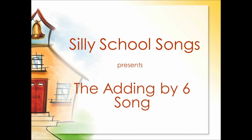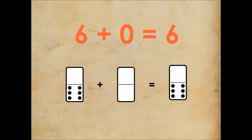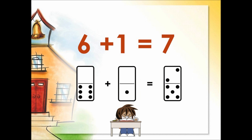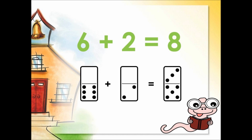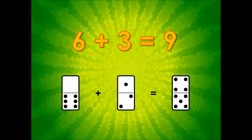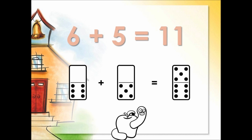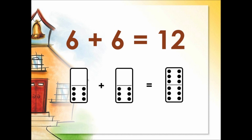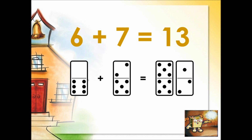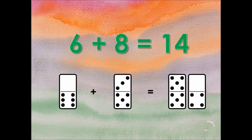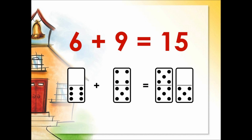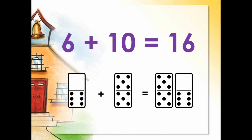Silly School Songs presents the adding by six song. Six plus zero is six. Six plus one is seven. Six plus two is eight. Six plus three is nine. Six plus four is ten. Six plus five is eleven. Six plus six is twelve. Six plus seven is thirteen. Six plus eight is fourteen. Six plus nine is fifteen. Six plus ten is sixteen.